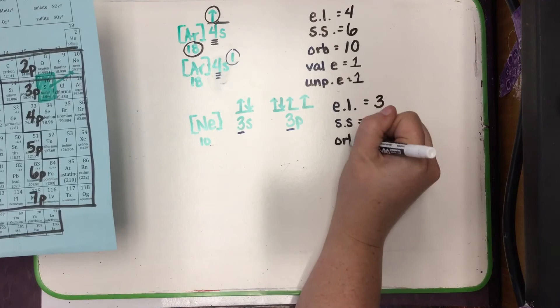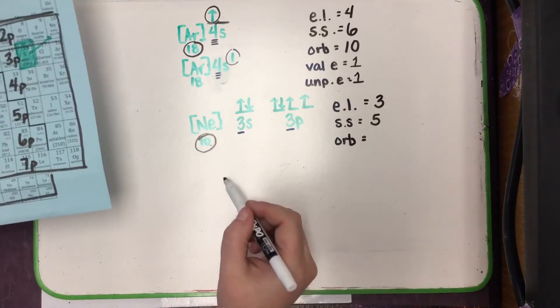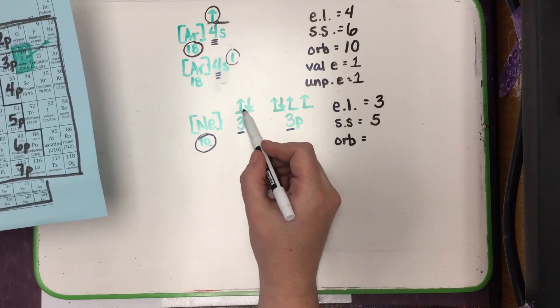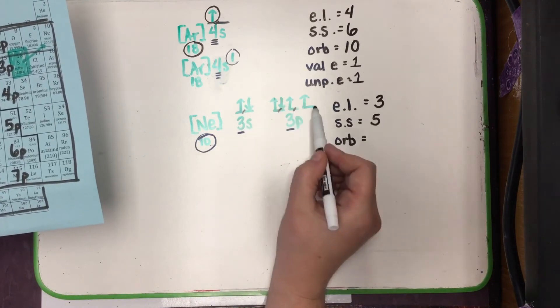Orbitals. We use noble gas divided by 2, so that's 5, plus any lines: 6, 7, 8, 9.